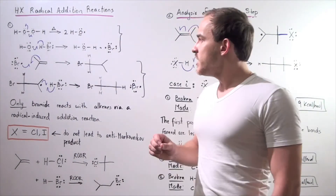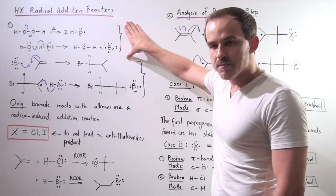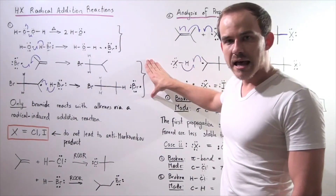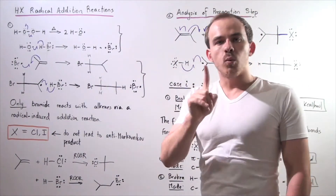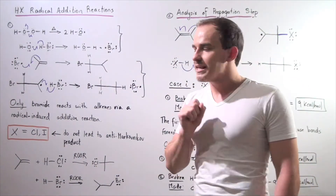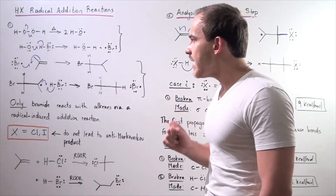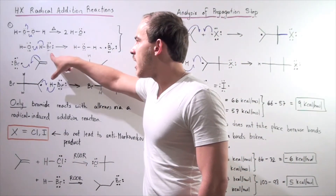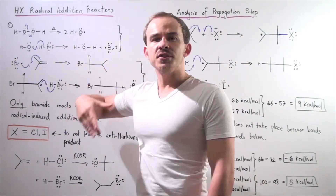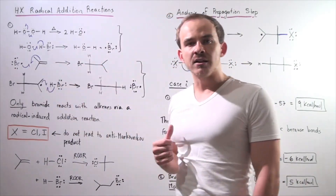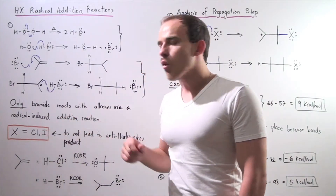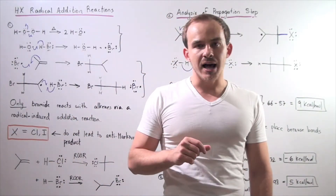We have the initiation steps and the propagation steps. Now what happens if we replace this bromide molecule with another halogen, such as chloride or iodide?